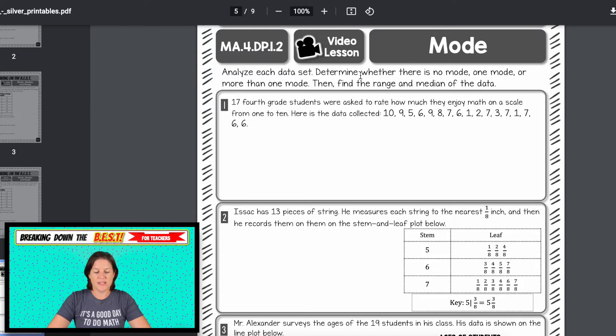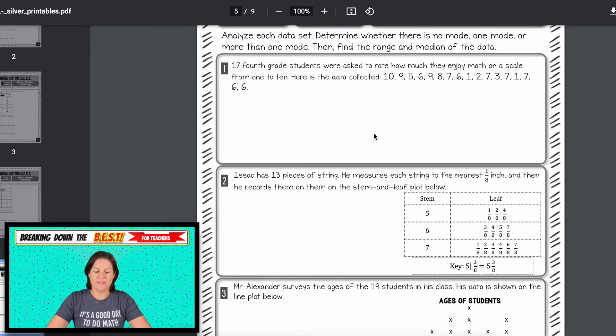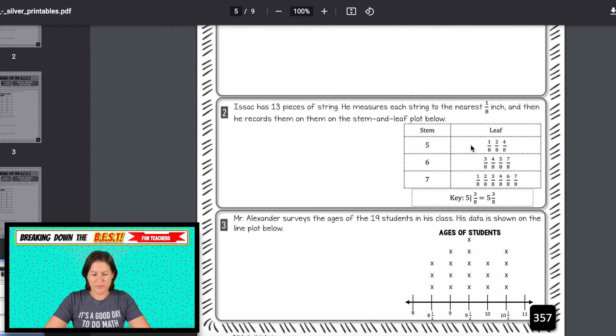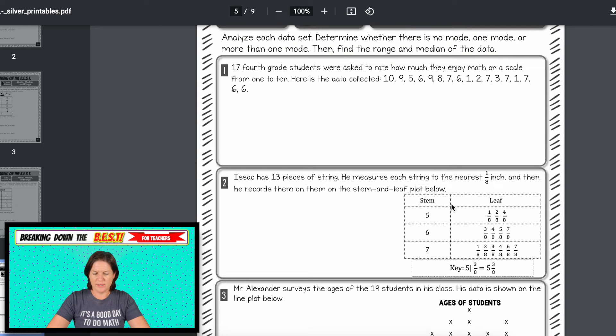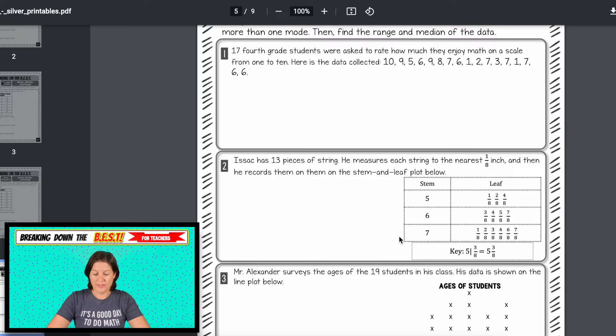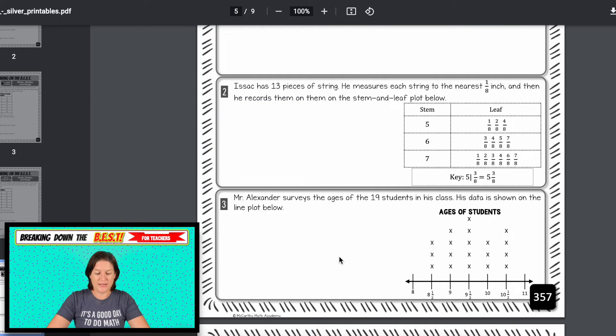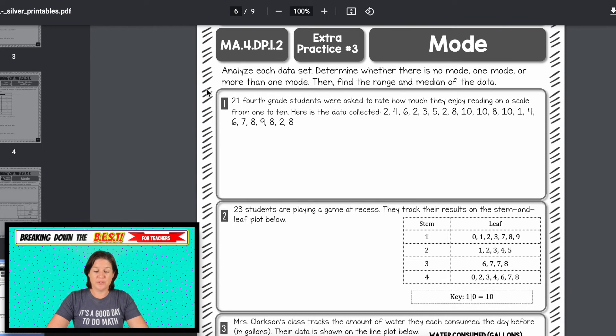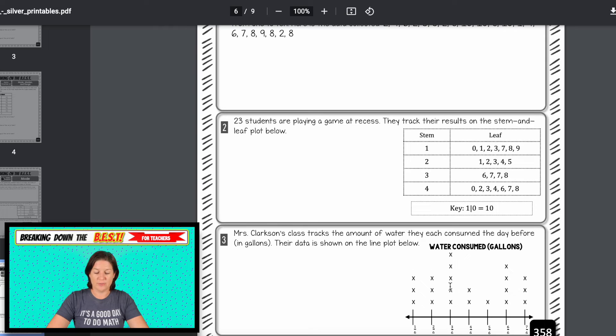And then here is the one with the mode. This says to analyze each data set, determine whether there is no mode, one mode, or more than one mode. Then find the range and the median of the data. So you can see we have 17, 13, 19. These are odd numbers to help us with the median. Anytime we're finding the median, we need to make sure in fourth grade we have odd numbers there. Otherwise, they will have to find the average of the two numbers in the middle, and we're not there yet in fourth grade. Then students will have extra practice that looks very similar. Again, we have odd numbers.